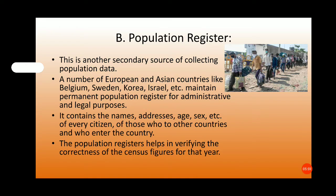A number of European and Asian countries like Belgium, Sweden, Korea, and Israel maintain a permanent population register for administrative and legal purposes. It contains the names, address, age, sex, etc. of every citizen, including those who migrate to other countries and those who enter the country. The population register helps in verifying the correctness of the census figures for that year.